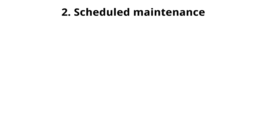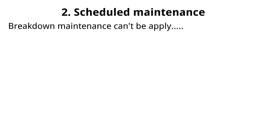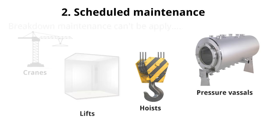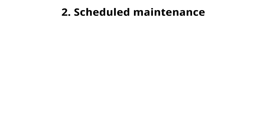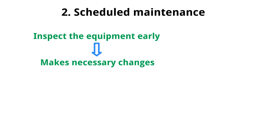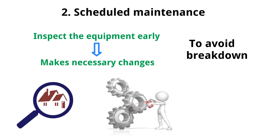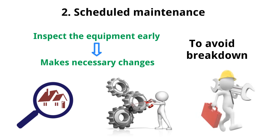2. Scheduled maintenance. Breakdown maintenance cannot be applied in the maintenance of cranes, lifts, hoists, and pressure vessels. The scheduled maintenance department inspects equipment early and makes necessary changes to avoid breakdown. Scheduled maintenance incorporates inspection, lubrication, and repair of certain equipment.